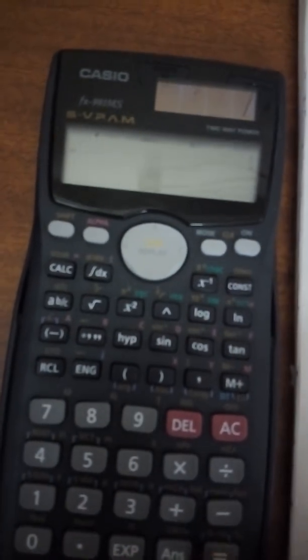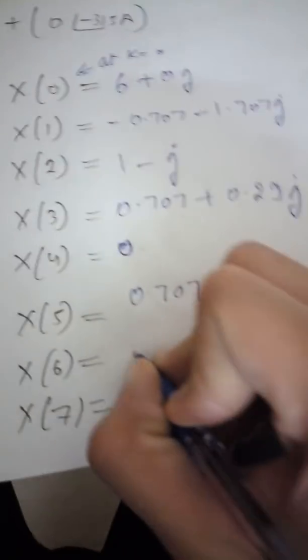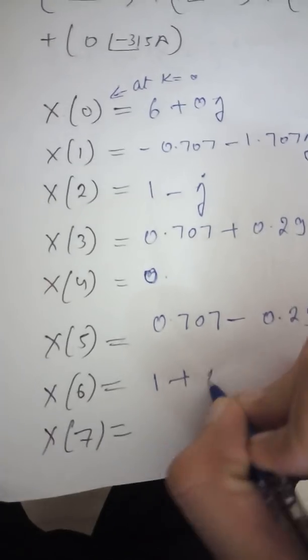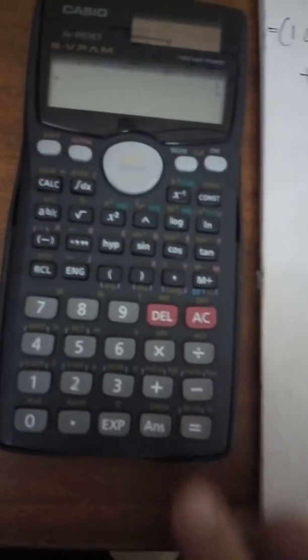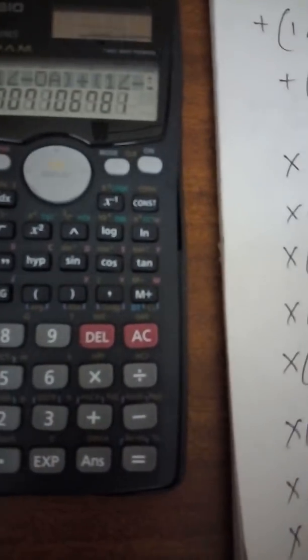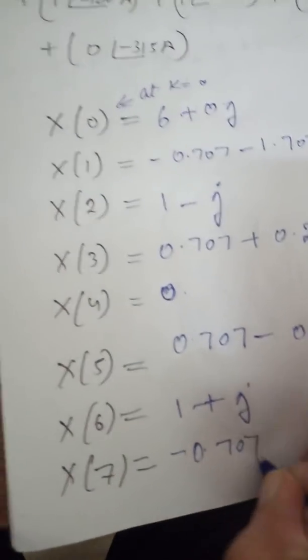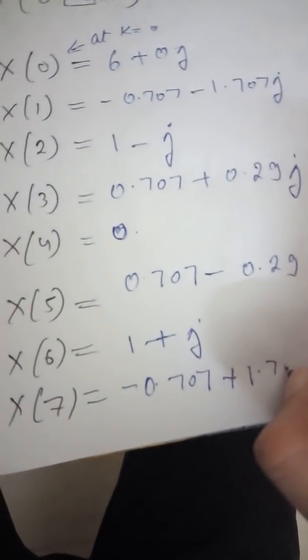Press Calc and enter A equals 6 for X(6): the real part is 1, and Shift equals gives plus 1j, so X(6) equals 1 plus j. Press Calc and enter 7 for X(7): the real part is minus 0.707, and Shift equals gives plus 1.707j.